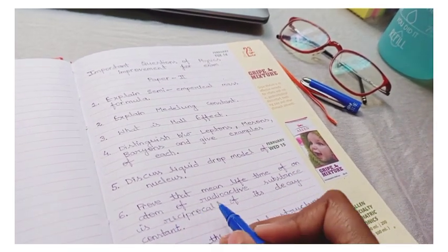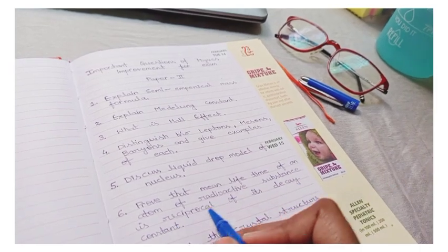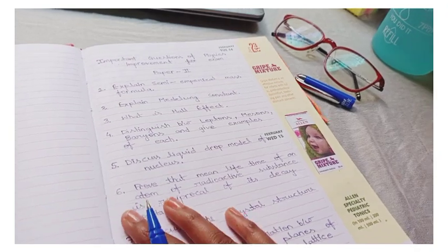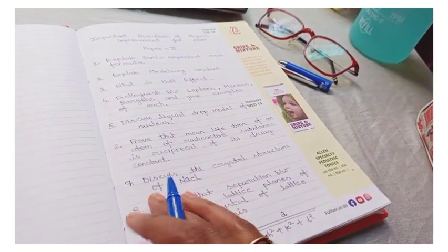Sixth number question is: prove that mean lifetime of an atom of a radioactive substance is reciprocal of its decay constant. This is decay constant, which we denote by lambda.